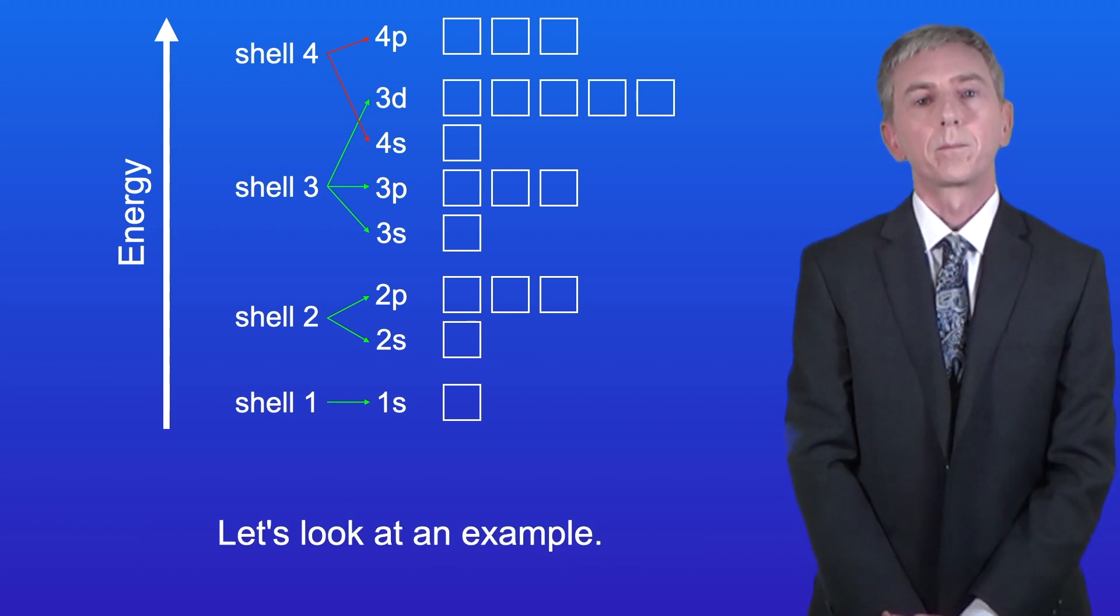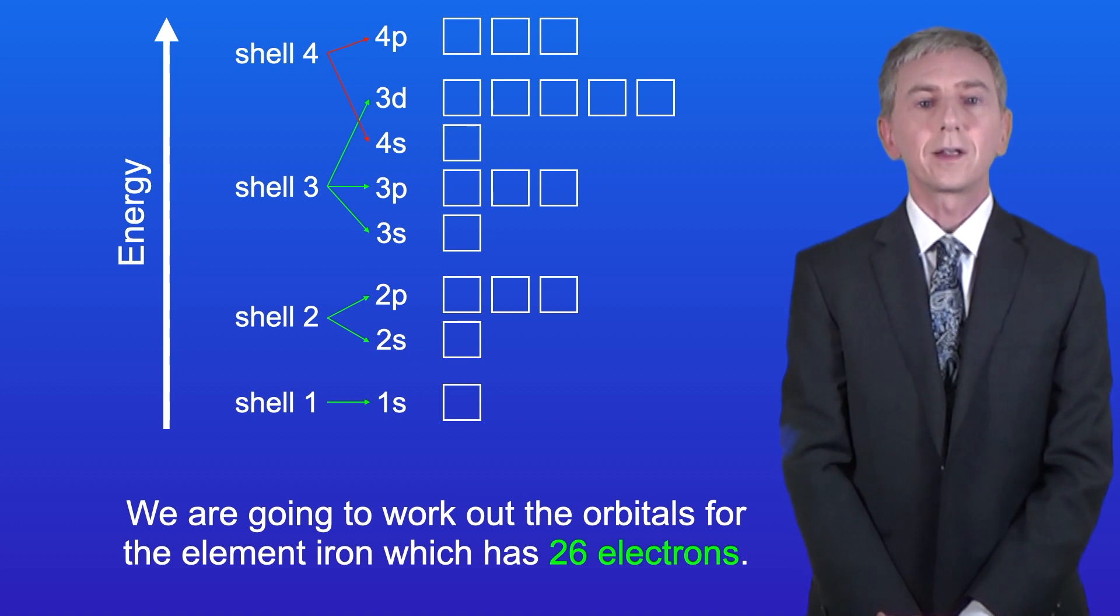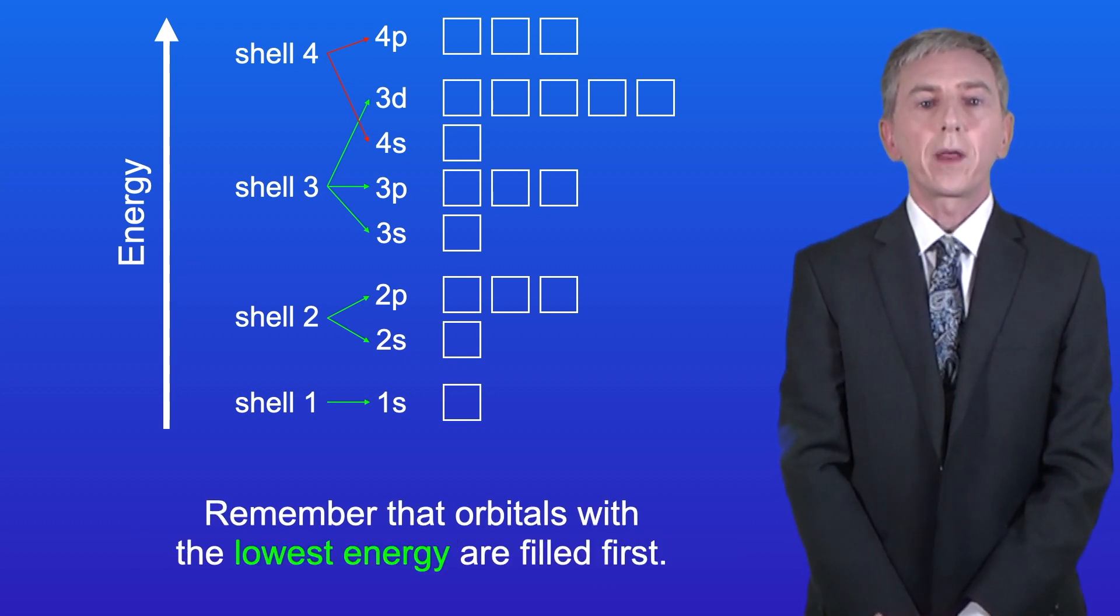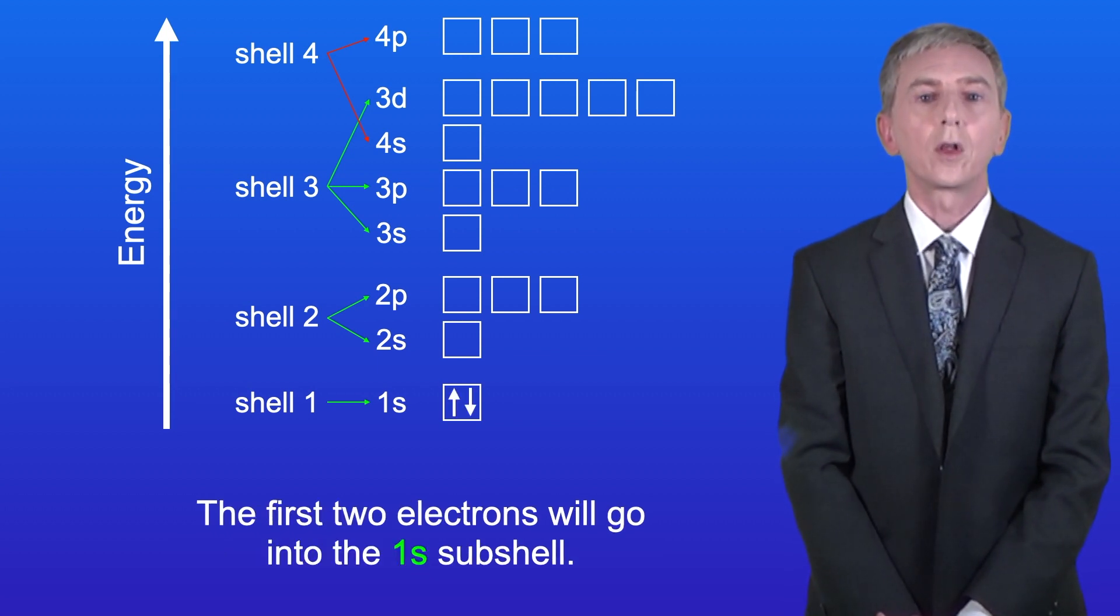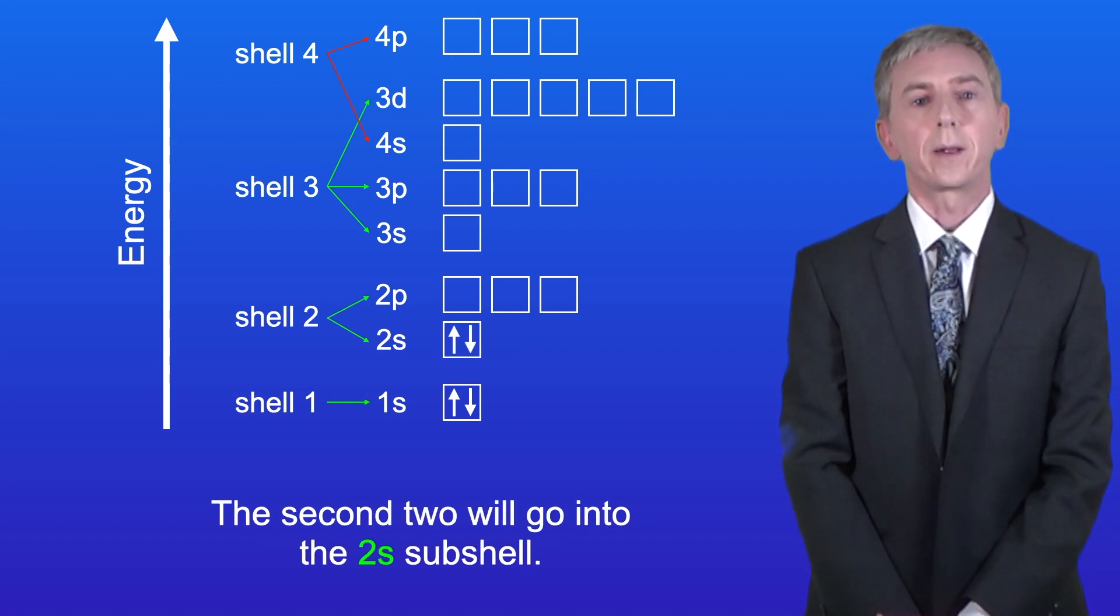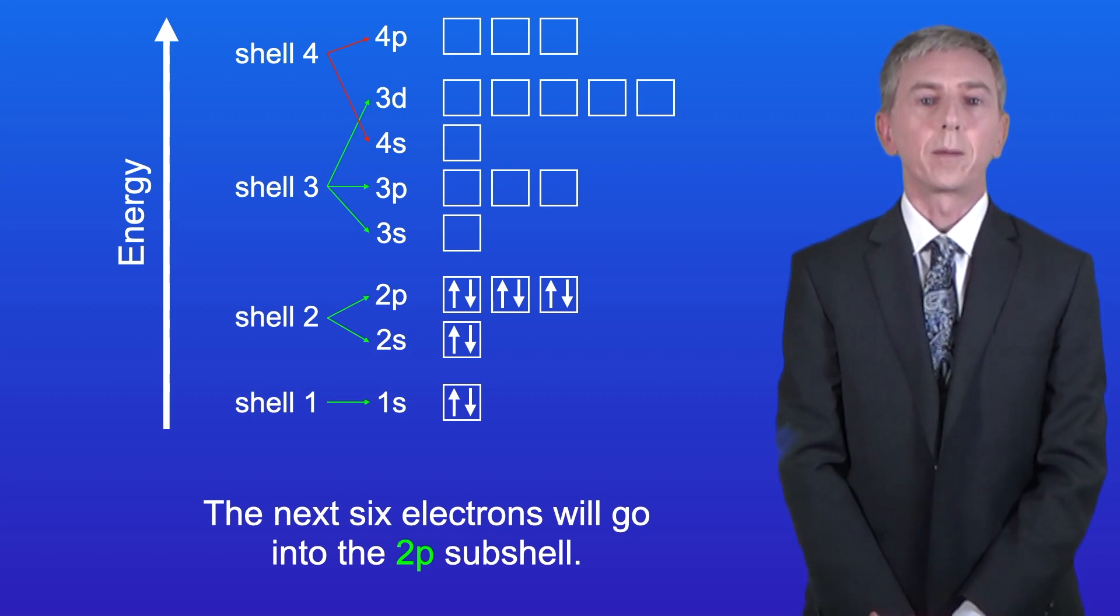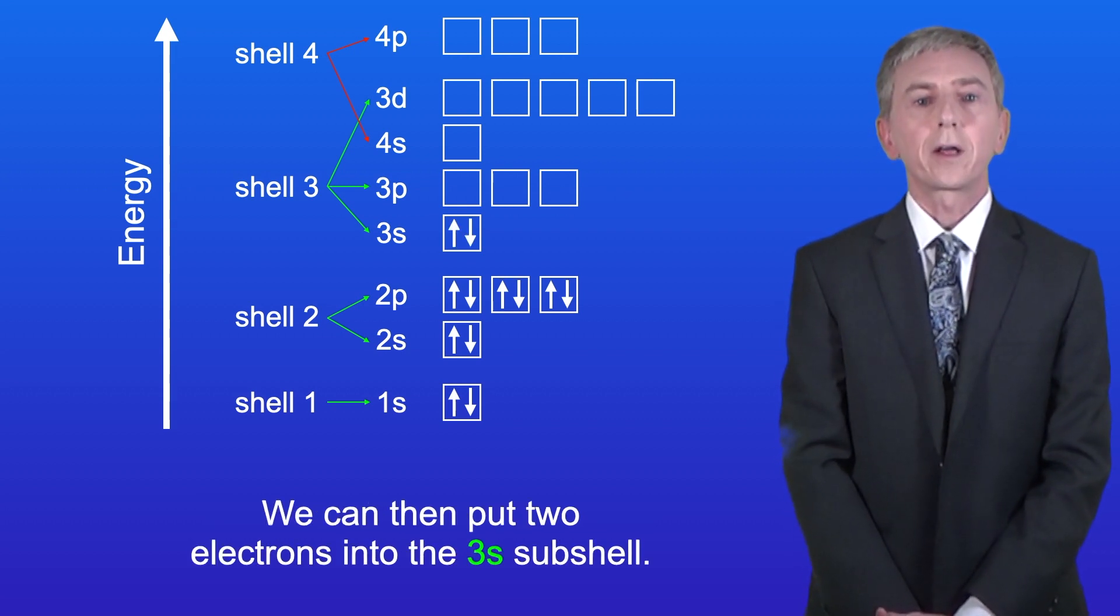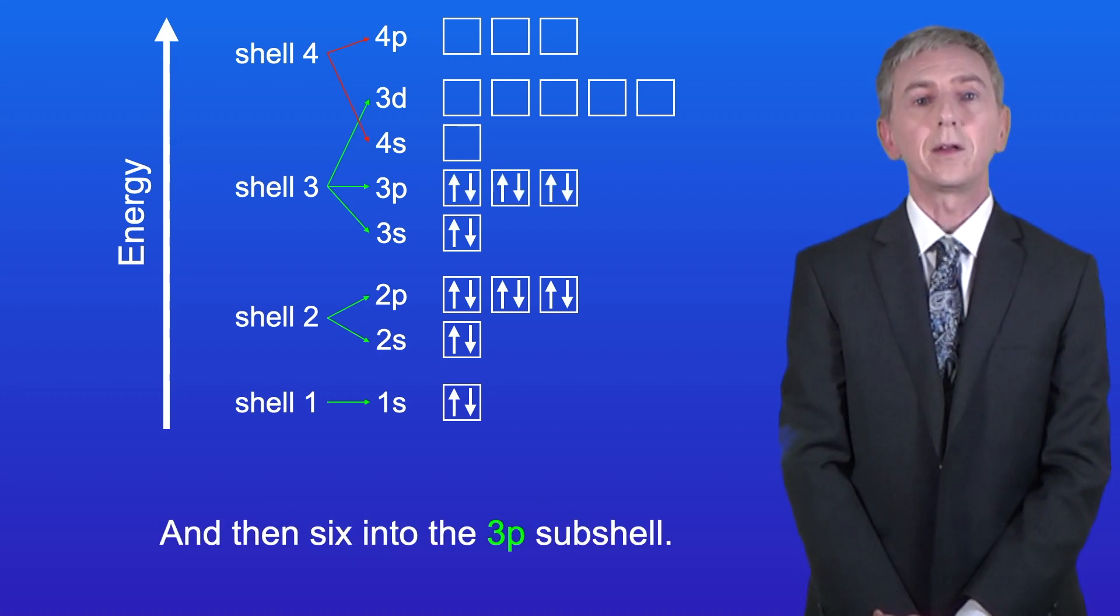Let's look at an example. We're going to work out the orbitals for element iron which has 26 electrons. Remember that orbitals with the lowest energy are filled first. Okay, so the first two electrons will go into the 1s-subshell and the second two will go into the 2s-subshell. The next six electrons will go into the 2p-subshell. We can then put two electrons into the 3s-subshell and then six into the 3p-subshell.